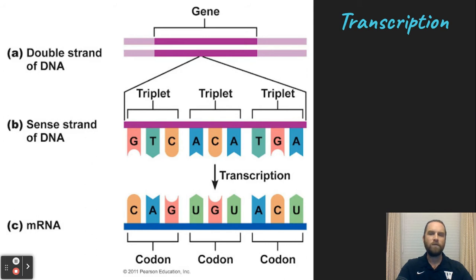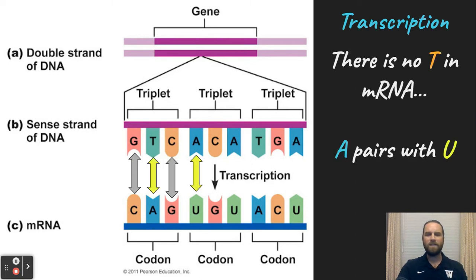So when transcription happens in the nucleus, what we do is we open up the DNA into a transcription bubble and we see one strand of DNA that gets copied into messenger RNA. Now the way this happens is G pairs with C, C pairs with G. This is a lot like DNA replication so far, but the key difference is T pairs with A on the messenger RNA and A pairs with U this time because there is no T in messenger RNA.